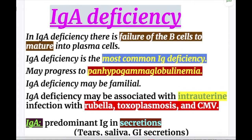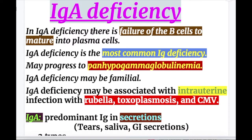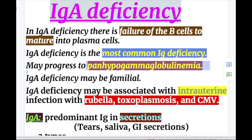In IgA deficiency, there is failure of the B cell to mature into plasma cells to produce IgA. IgA deficiency is the most common immunoglobulin deficiency and it may progress to panhypoglobulinemia. It may be familial and may be associated with intrauterine infection with rubella, toxoplasmosis, and CMV.